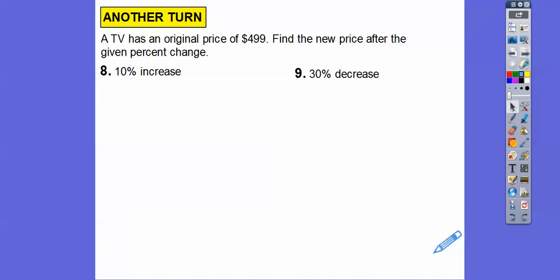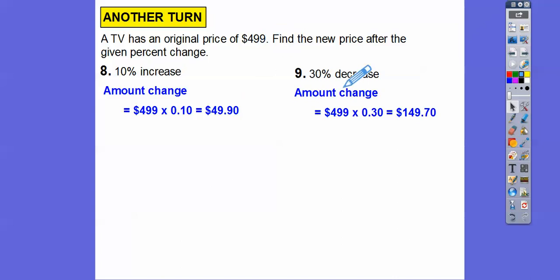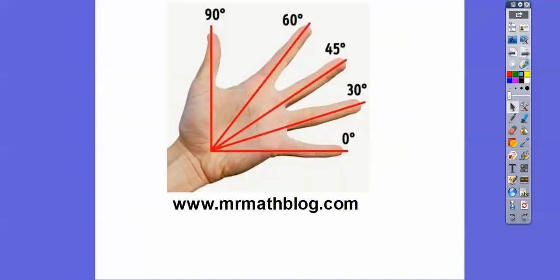All right, so a TV has an original price of $499. Find the new price after the given percent change. I'm going to do these together. So this one's going to be a 10% increase and a 30% decrease. Let's find out how much this one increases and how much this one decreases by multiplying 0.10 times this number and 0.30 times that number. That'll tell us how much money it increased and decreased. So on the increase, it increased by $49.90. And the decrease, it decreased by $149.70. So here I'm going to add the increase. I'm going to add this amount to $499. And this is a decrease, so I'm going to subtract this amount from $499. That's what this next step says. And that gives us those two prices. Those are our new prices. All right, you guys, I hope that makes sense. And take care.